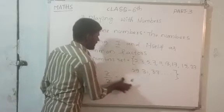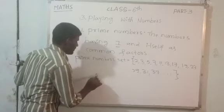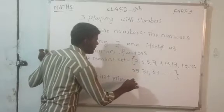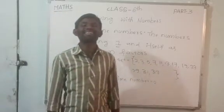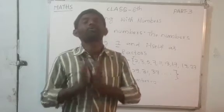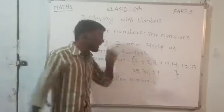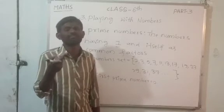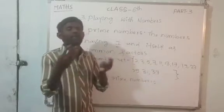2 is the first Prime Number. They can ask you: which is the least Prime Number, or which is the smallest Prime Number? The answer is 2. Then take 3 — this number has factors 3 and 1 only. Then take 5 — this number has factors 5 and 1 only.